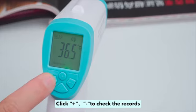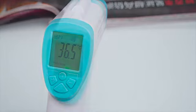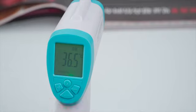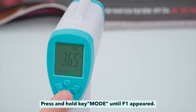Click plus or minus to check the records. Click key mode to set the sound on or off. Press and hold key mode until F1 appears.